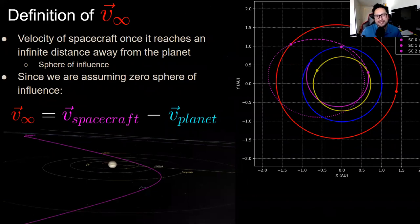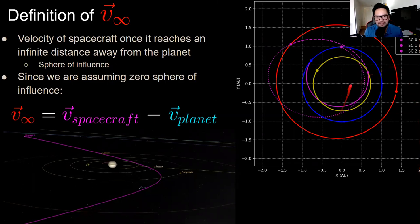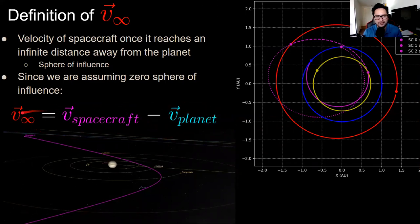The v-infinity vector (v∞) is defined as the velocity of a spacecraft once it reaches an infinite distance from the planet. In the two-body problem, if kinetic energy exceeds potential energy you'll reach infinite distance and still have remaining velocity — that's v∞. Assuming zero sphere of influence, the actual v∞ is simply the spacecraft's velocity at that point minus the planet's velocity, both with respect to the Sun.